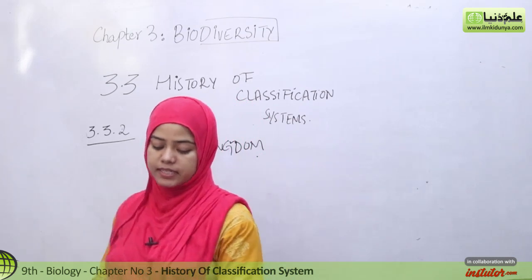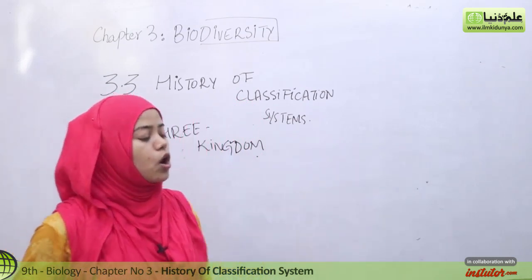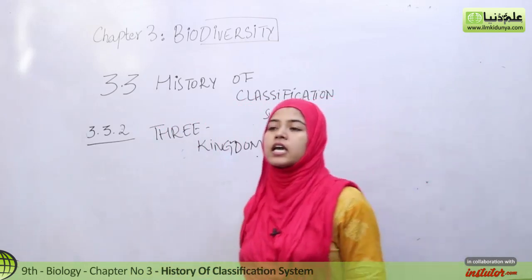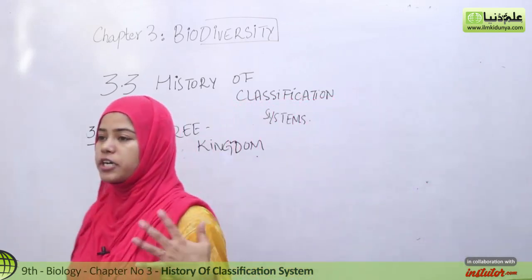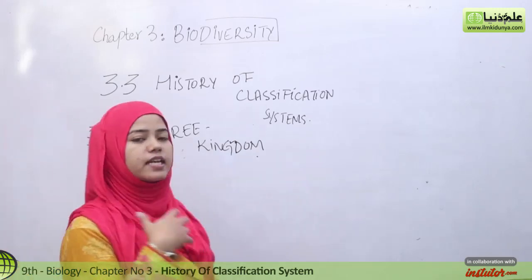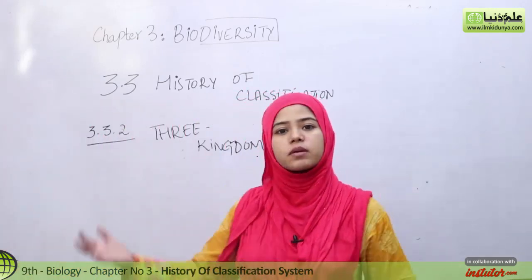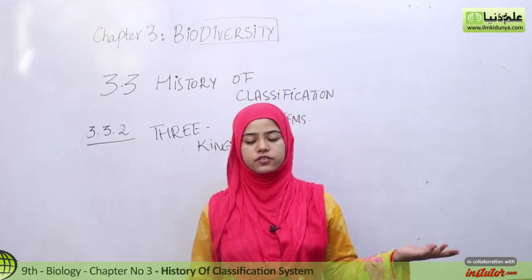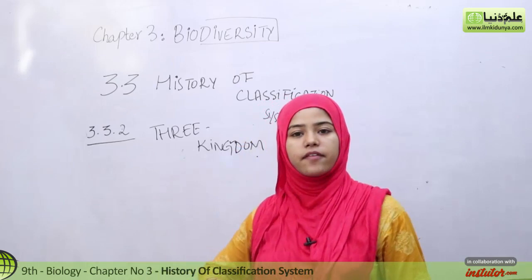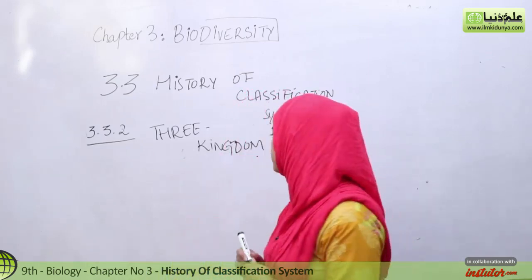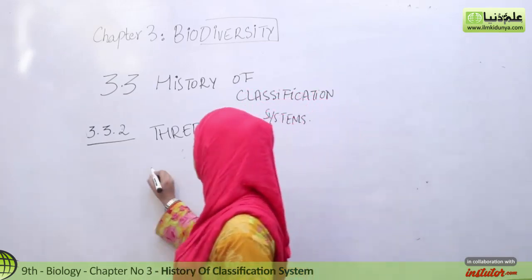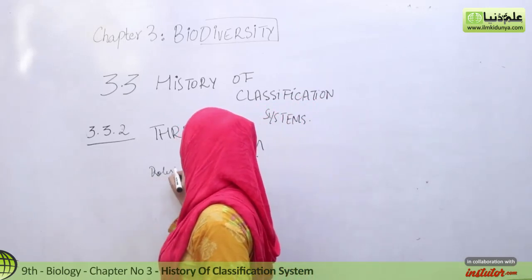What was the three kingdom classification system? He told that there were 3 kingdoms, and he introduced Protista. He told us that Euglena-like structures — which are both autotrophs and heterotrophs — were placed in the kingdom Protista, separate from autotrophs and heterotrophs.